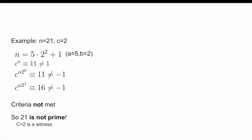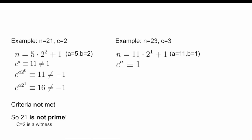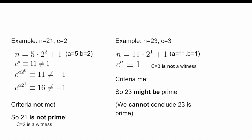Now, let's do a second example. Taking N equal to 23 and C equal to 3, then C to the power of A is in fact congruent to 1. So therefore, the criteria are met, and we have that C is not a witness to N being composite. Therefore, 23 might be a prime number. However, importantly, we cannot conclude that 23 is a prime, as the test can never actually guarantee a number is prime — it can only guarantee a number is not prime. And in fact, this time it was correct. 23 is indeed a prime number.